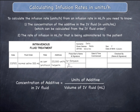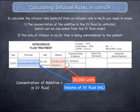Let's now replace each of these quantities with our actual values by reading the IV fluid order. The number of units of the additive is specified in the additives column. In this case, it is 25,000 units. The volume of the IV fluid to infuse can be read directly from the IV fluid order. In this case, it is 500 mils.